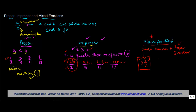So in this case, the fraction has 1 whole number and 1 proper fraction. Similarly, you can write 3 and 3 upon 5, where 3 upon 5 is the proper fraction, or 3 and 7 upon 11.